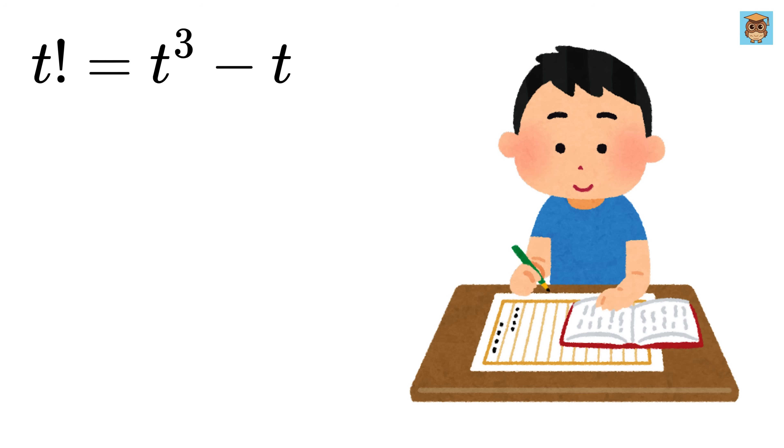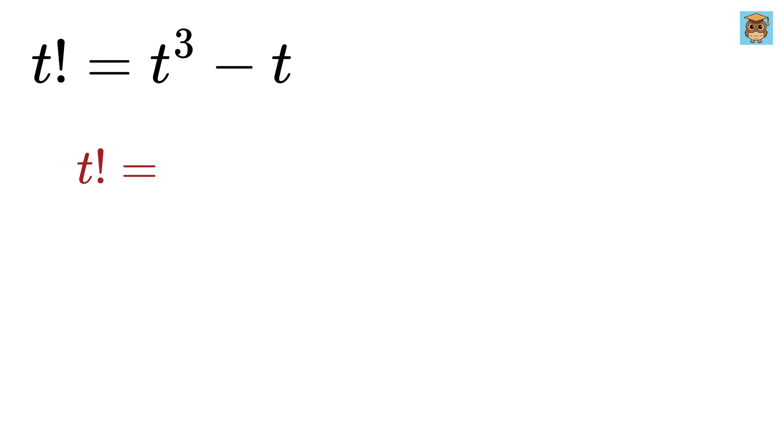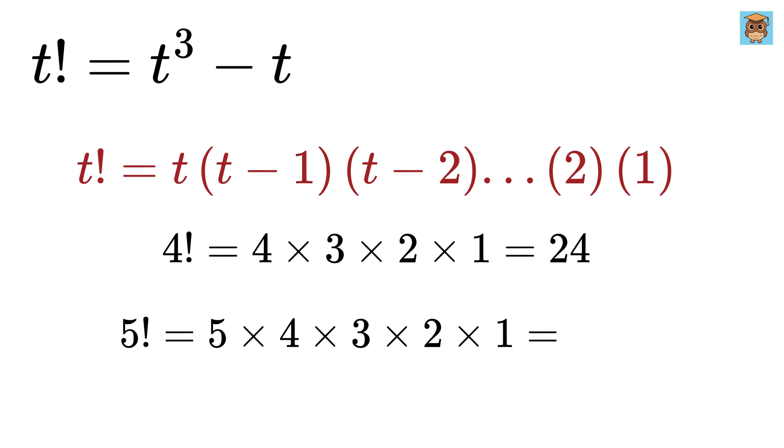Just a quick recap. For those who don't know what a factorial is, when you see something like t factorial, it means you multiply all the natural numbers from 1 up to t. For example, 4 factorial means 4 times 3 times 2 times 1, which is 24. 5 factorial means 5 times 4 times 3 times 2 times 1, which is 120.